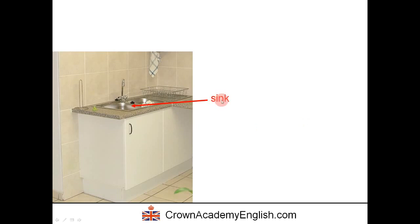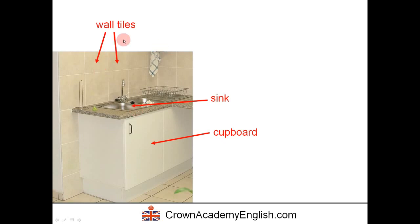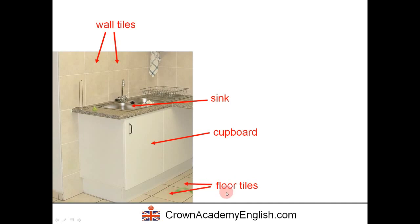This is called a sink. We wash the dishes in a sink. And this is a cupboard — the cupboard is under the sink. On the wall we have some tiles. The general word for these is tiles. We call them wall tiles to differentiate them from the tiles on the floor, which are called floor tiles.